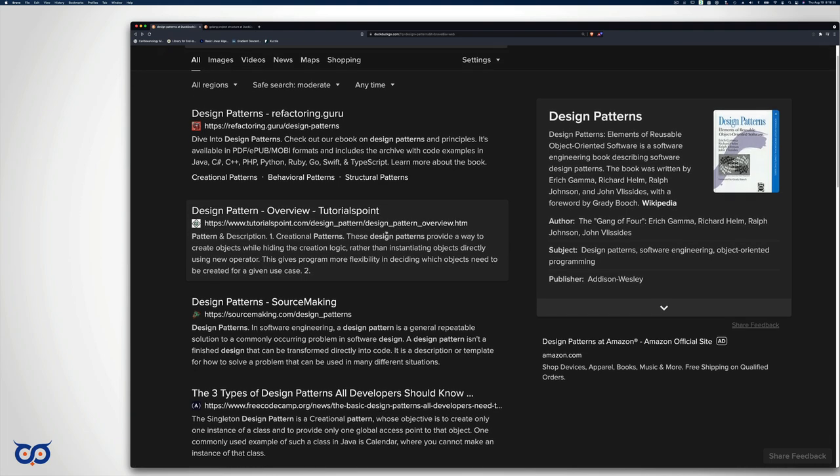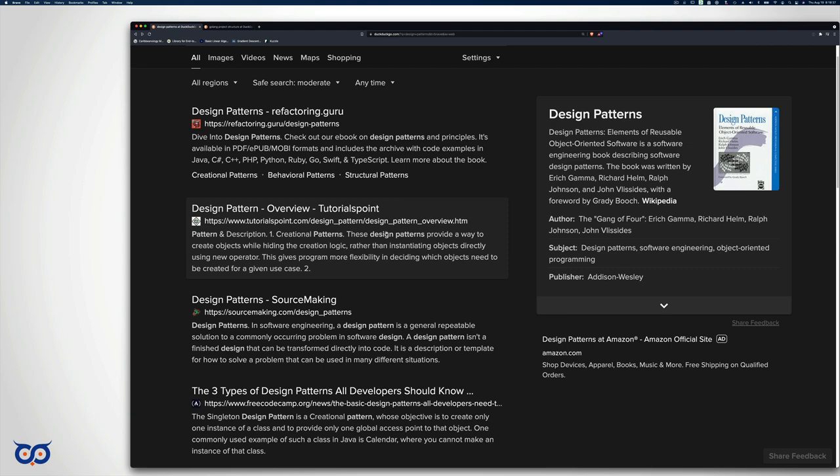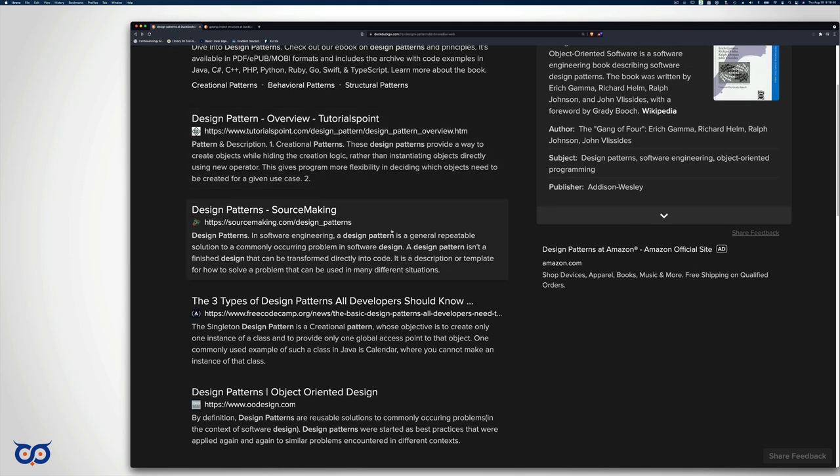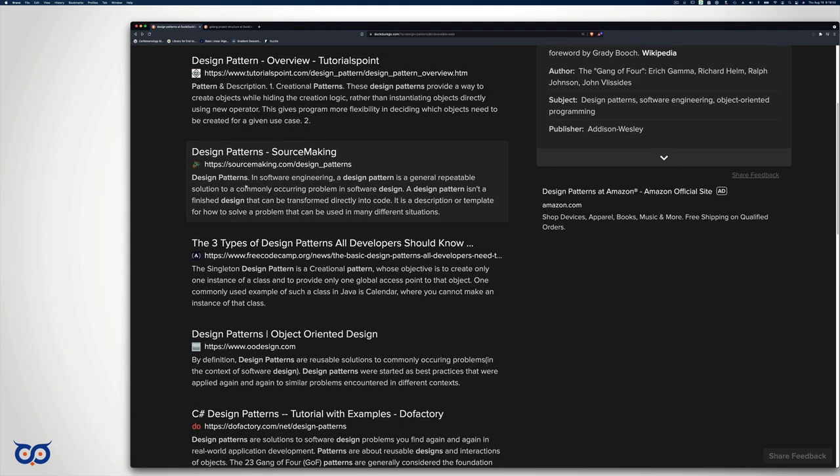I'm not going to tell you to read it. It's a pretty dense book. I've read it, but that was back in the day when I was mostly doing C++. Let's look at design patterns in general. In software engineering, a design pattern is a general repeatable solution to a commonly occurring problem in software design.